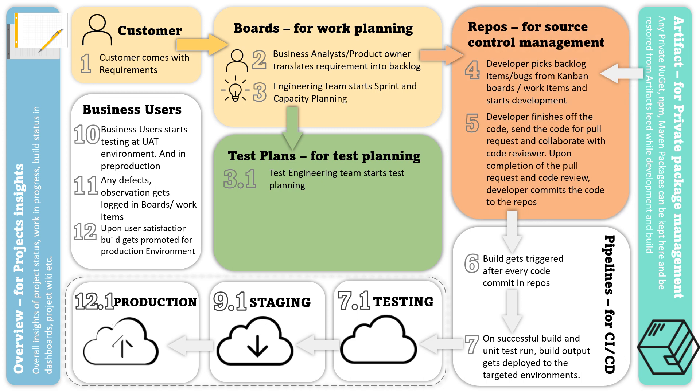Developers pick backlog items or bugs from Kanban boards or work items and start development. Once the developer finishes the code, they send it for a pull request and collaborate with the code reviewer. Upon completion of the pull request and code review, the developer commits the code to the repository — GitHub in our case — or it could be any code repository.